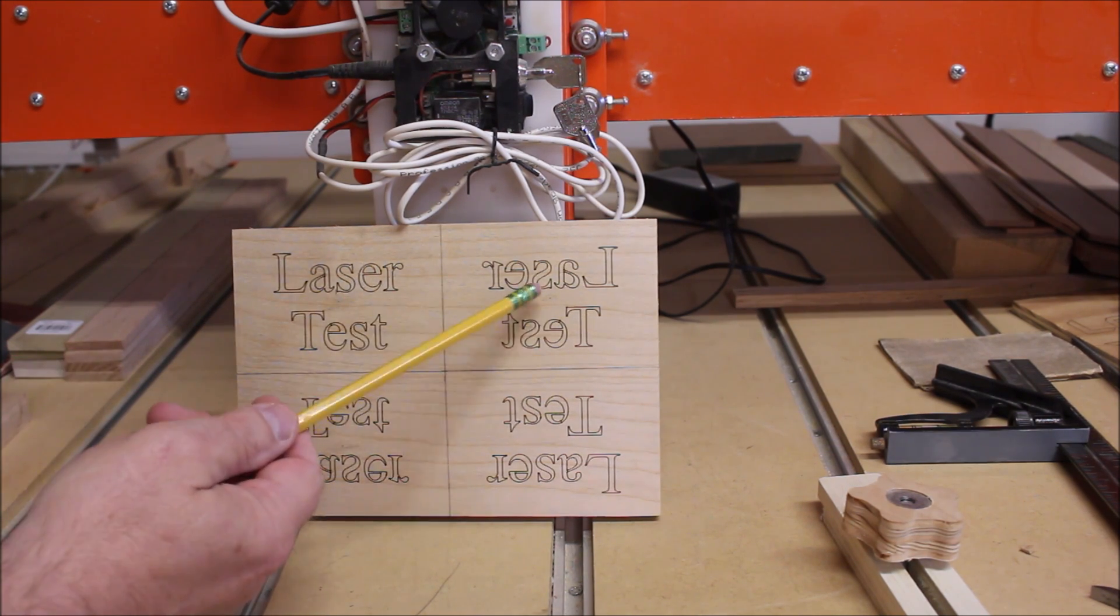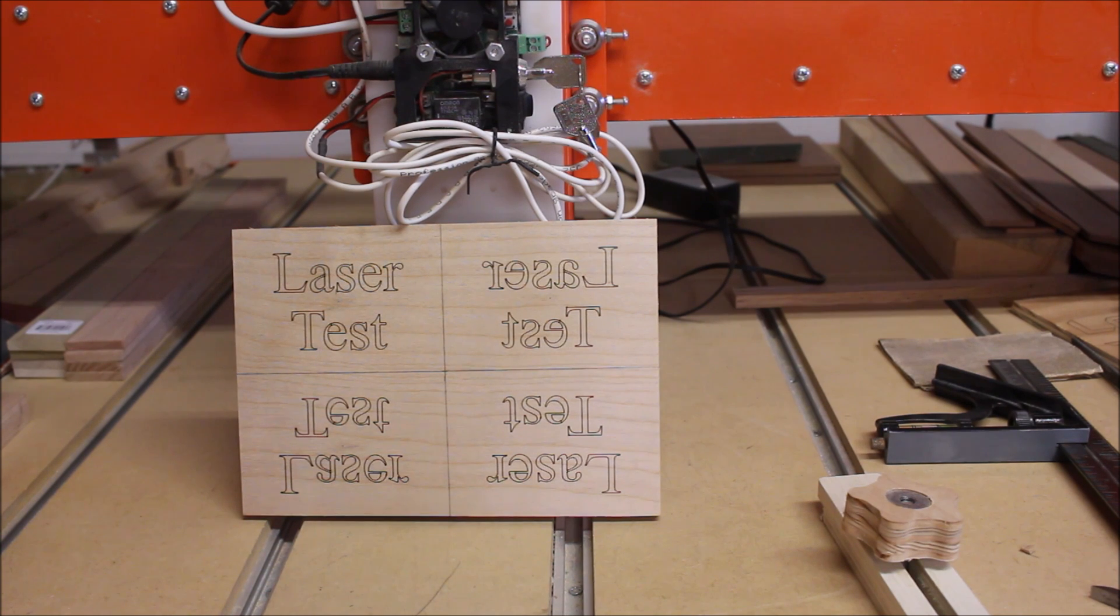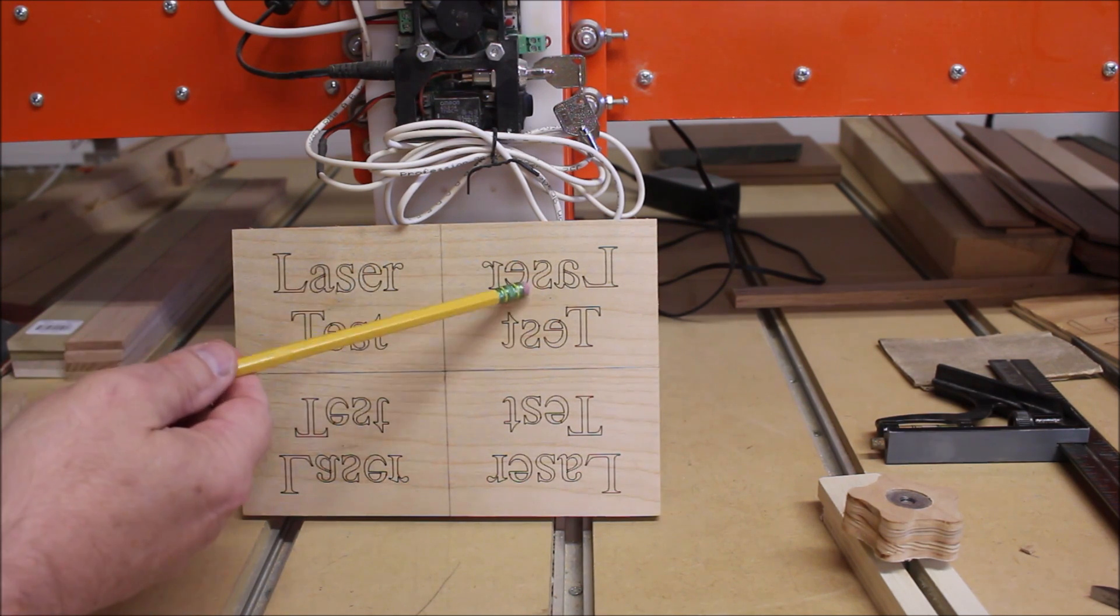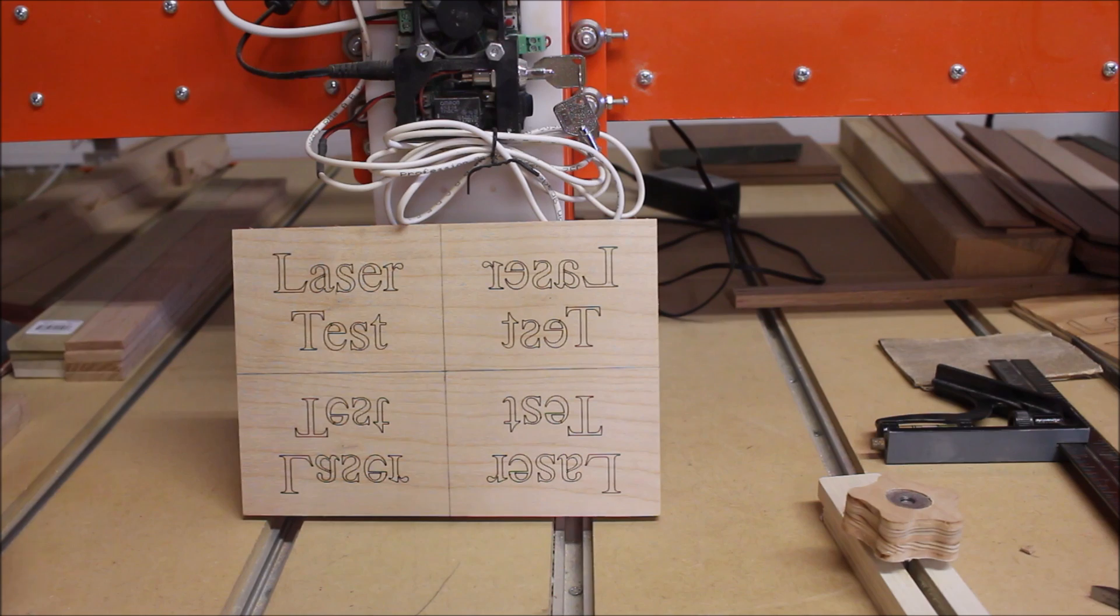Then I moved it over to the upper right side, ran the exact same program. But before I ran it, I went to my config homing/limits and changed the X from whatever it was to the opposite. When you run a program with your X-axis setting backwards, it will run a mirrored version, just flipped over.